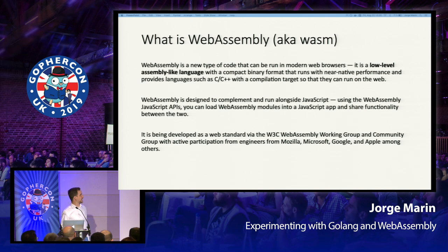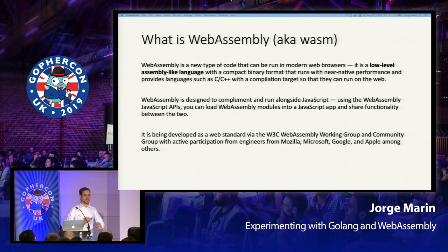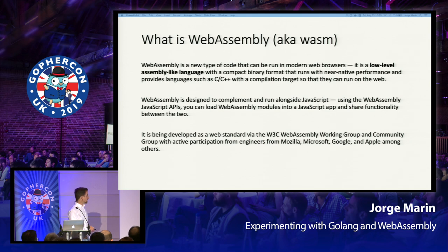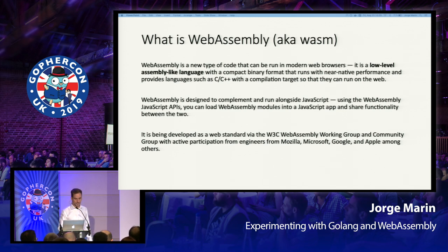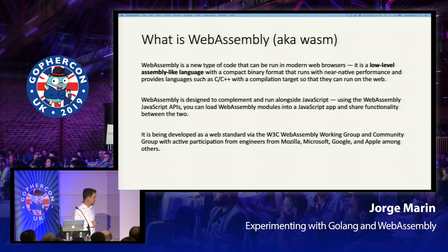WebAssembly is designed to complement and run alongside JavaScript — it's not trying to replace JavaScript. WebAssembly uses some JavaScript APIs to interface with it, and they both talk to each other and share some functionality. WebAssembly is being developed as a web standard by the World Wide Web Consortium WebAssembly Working Group, and it's in active development by developers from big companies like Mozilla, Microsoft, Google, and Apple, among others.